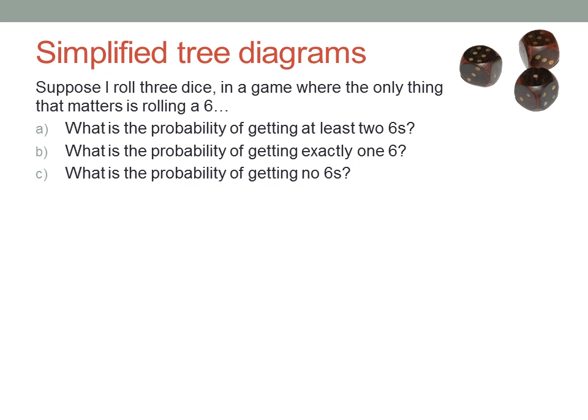In this case, the only thing I care about after each roll is whether I roll the six. So the first die could come up as a six, or as something else, and there's a one-in-six chance of getting a six, and five-in-six chance of not getting a six.